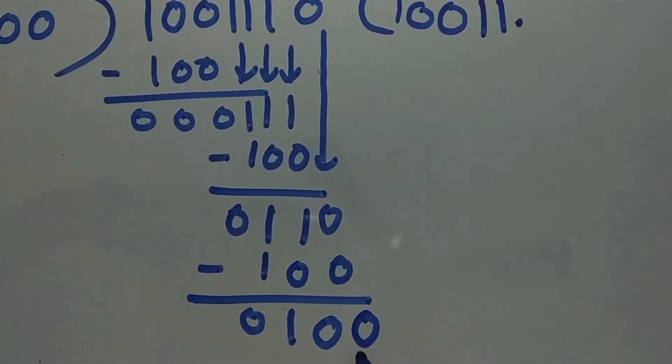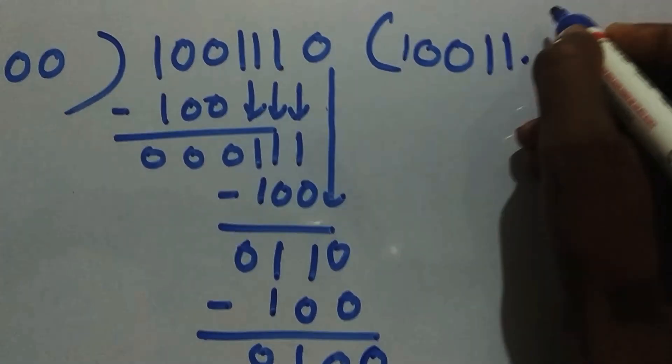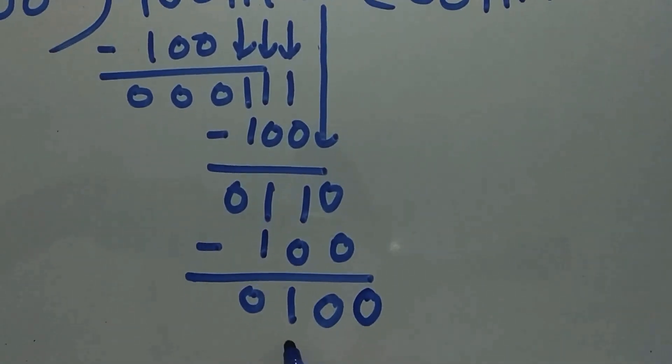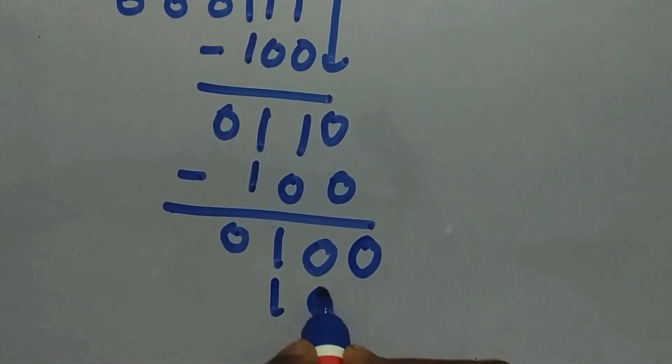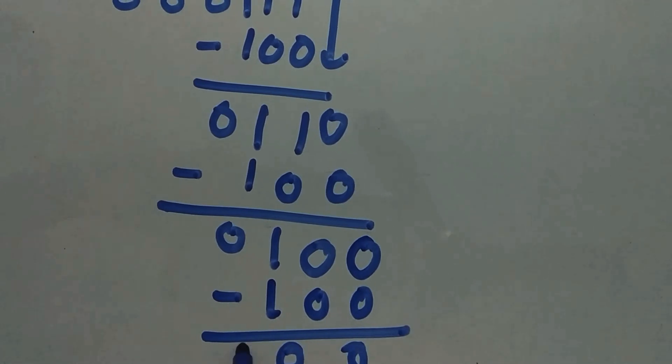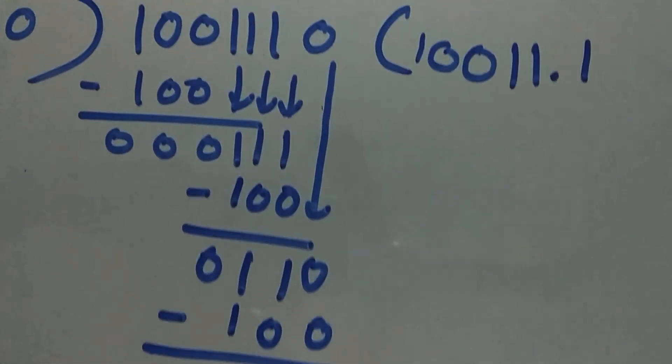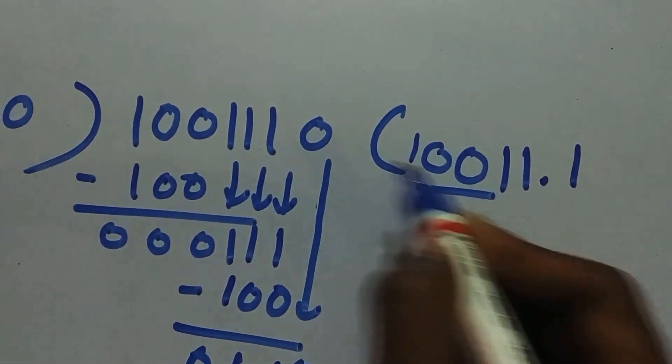You can write n number of 0s, but one 0 is sufficient for us. So we need to do this. How is it done? 100 multiplied by 1, you get 100. Subtract them. It is 000. There you go. Remainder is 0. This is the answer for this division.